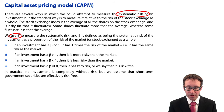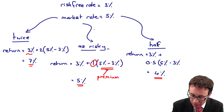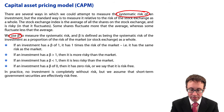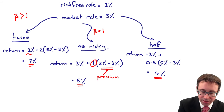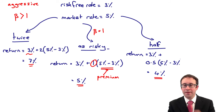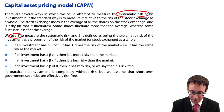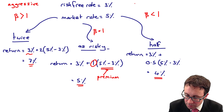Just a bit about the bullet points before we look at the examples in the next video. If beta equals 1, the investment has the same risk as the market — that's the middle example. If an investment has a beta greater than 1, it is more risky than the market. That is sometimes referred to as an aggressive investment. If beta is less than 1, then it is less risky than the market, which is sometimes referred to as a defensive investment.